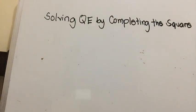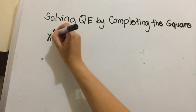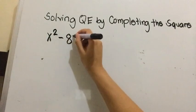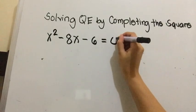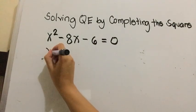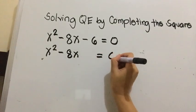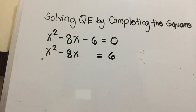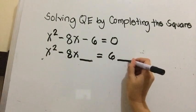Let's have the discussion on how we're going to solve your quadratic equation by completing the square. If we have the example x squared minus 8x minus 6 equals 0. Since the given is already in standard form, we're going to transpose first the value of c. So we're going to have x squared minus 8x equals 6. Since we have already transposed the value of c, we're going to find the third term and add it on both sides.